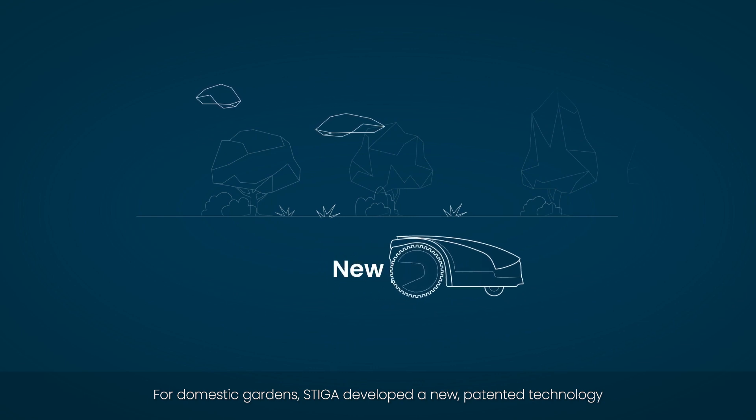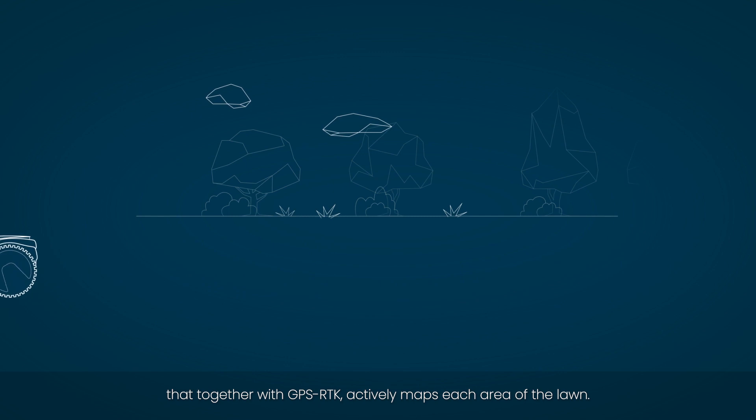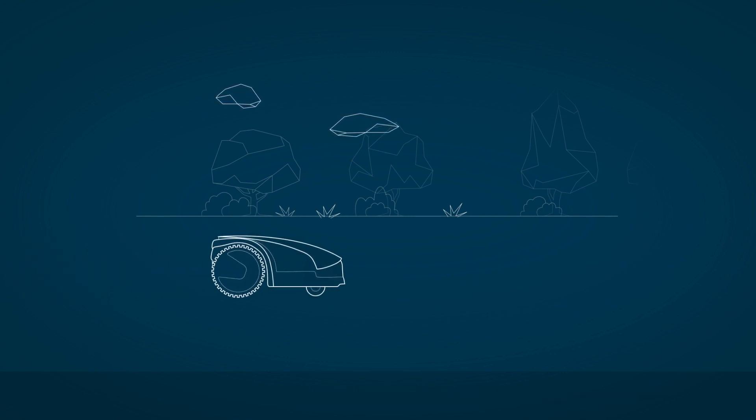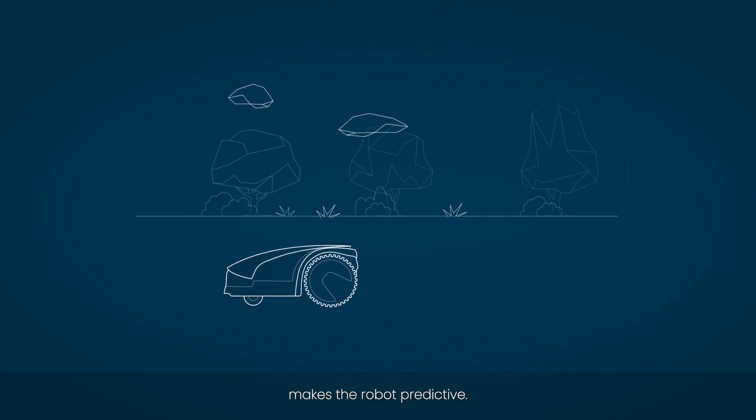For domestic gardens, Steger developed a new patented technology that together with GPS RTK actively maps each area of the lawn. AGS, Active Guidance System, makes the robot predictive.